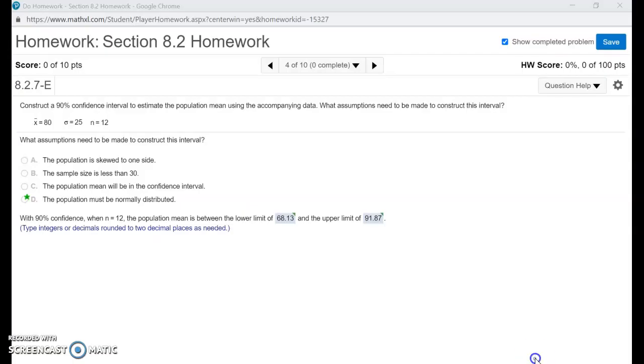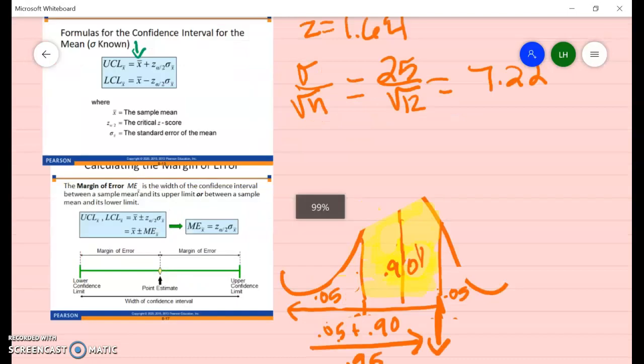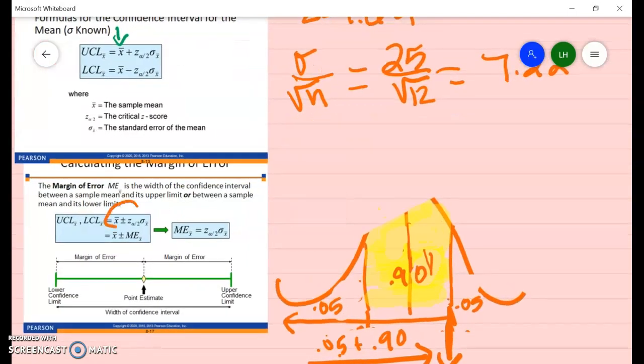So now we're ready to do our confidence interval. And our sample mean is 80. So here is our formula. So we're going to do X̄ plus or minus Z times the standard error of the mean.